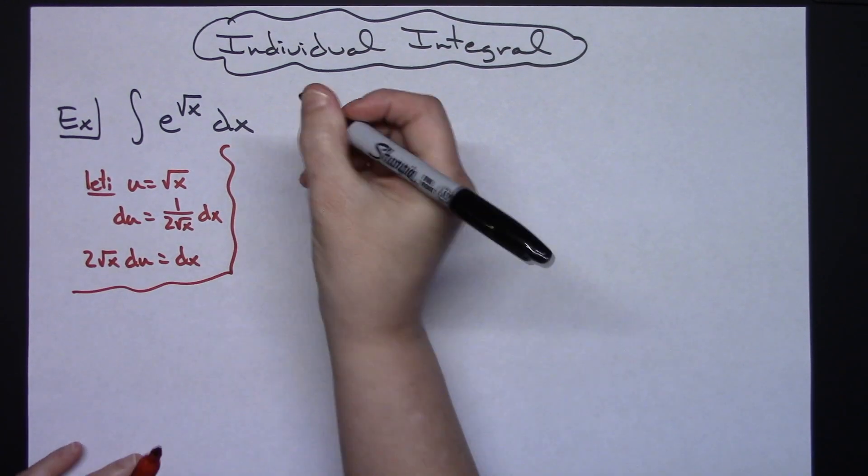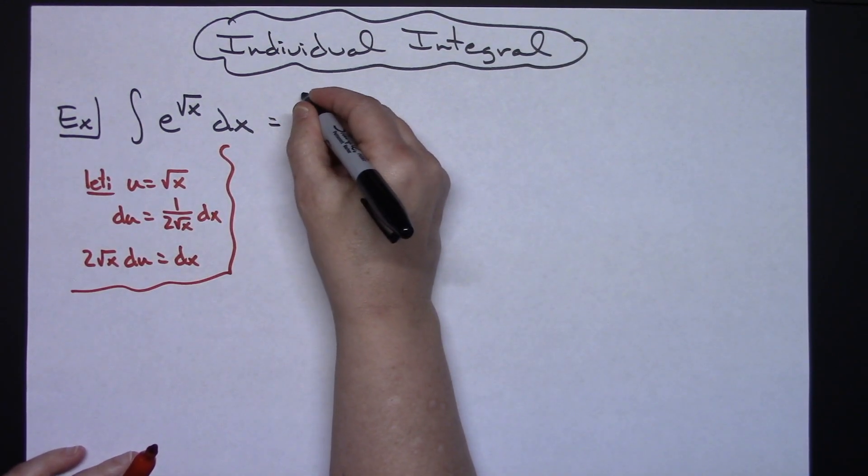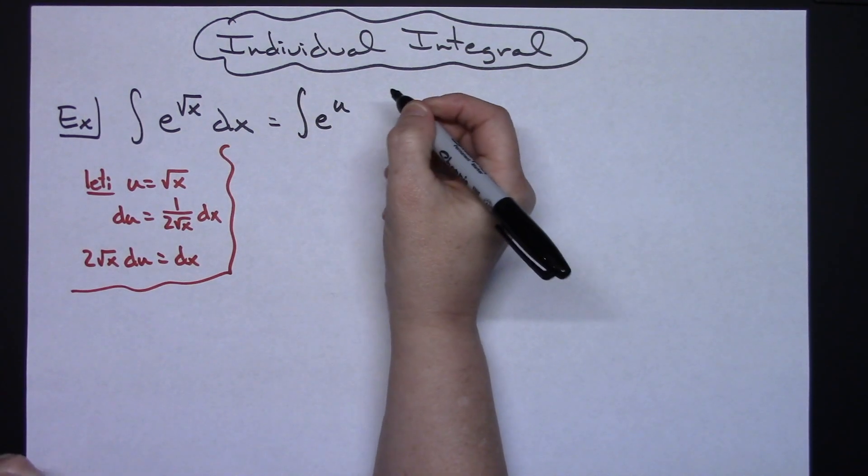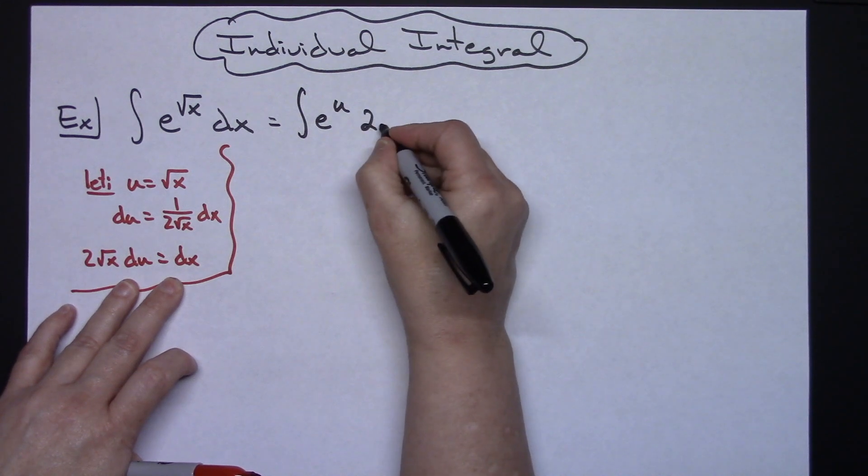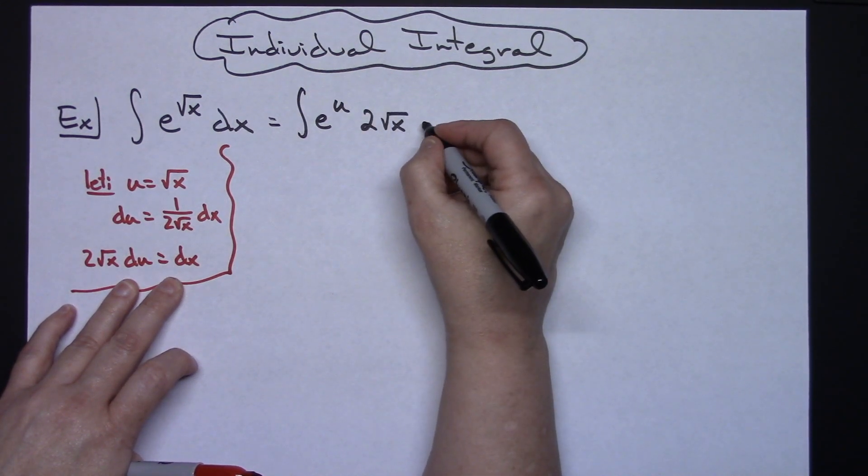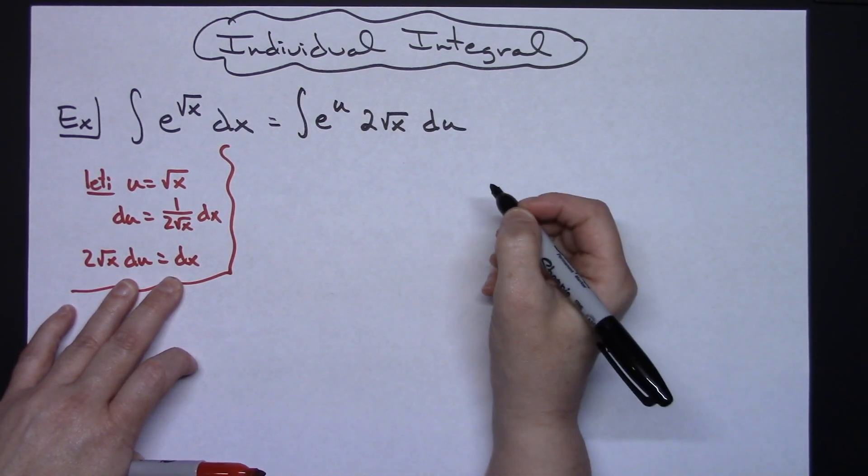Now we're going to come back up here and we're going to do our substitutions. So we'll have the integral of e to the u, replacing dx with what that equals, we'll have 2 square root of x and then du.